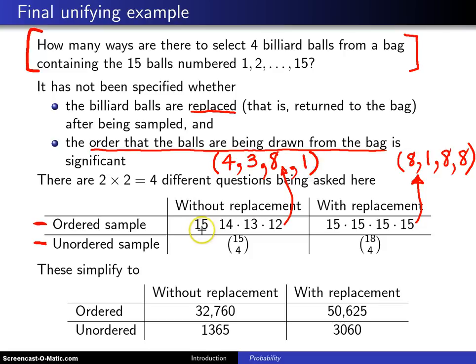How many ways are there to do that particular sampling? Well, there's 15 choices on the first draw, followed by 14, 13, 12, and that turns out to be 32,760. So not surprisingly, a little bit lower than we had in this particular case.